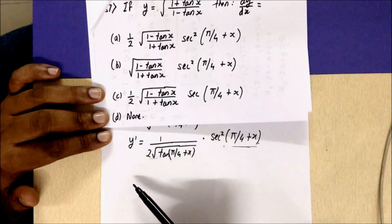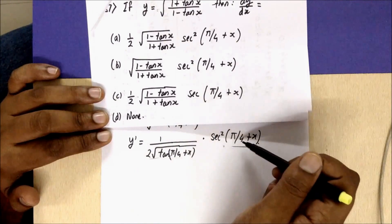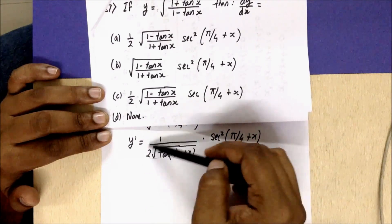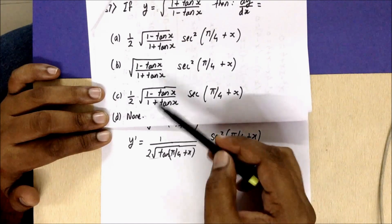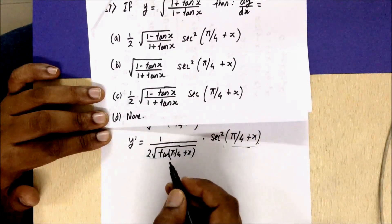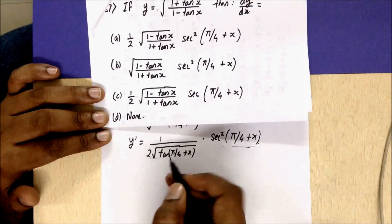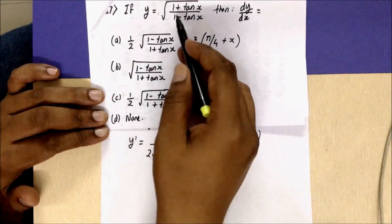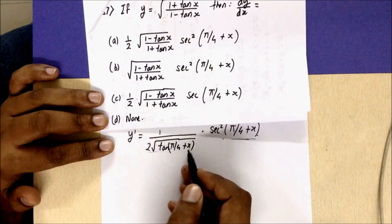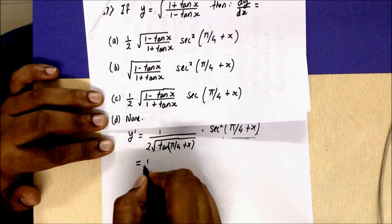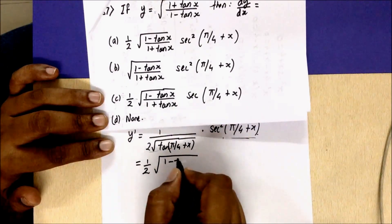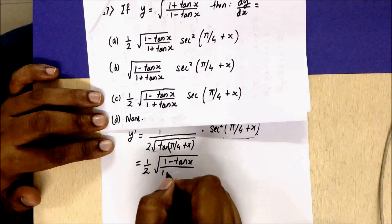The derivative of √(tan(π/4 + x)) is 1/(2√(tan(π/4 + x))) multiplied by sec²(π/4 + x). Since we originally wrote (1 + tan x)/(1 − tan x) as tan(π/4 + x), we resubstitute to get dy/dx = (1/2)·√((1 − tan x)/(1 + tan x))·sec²(π/4 + x).